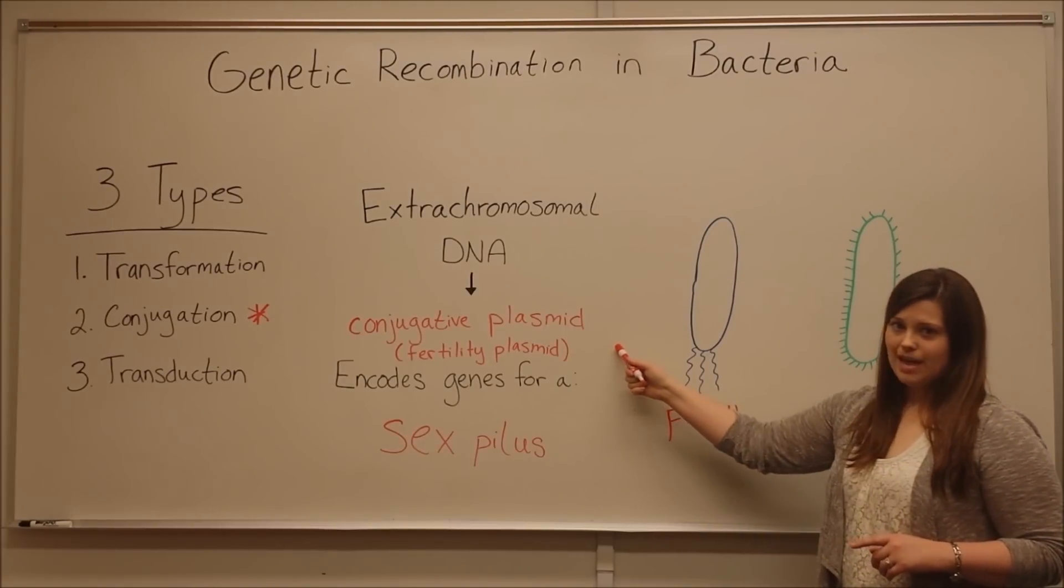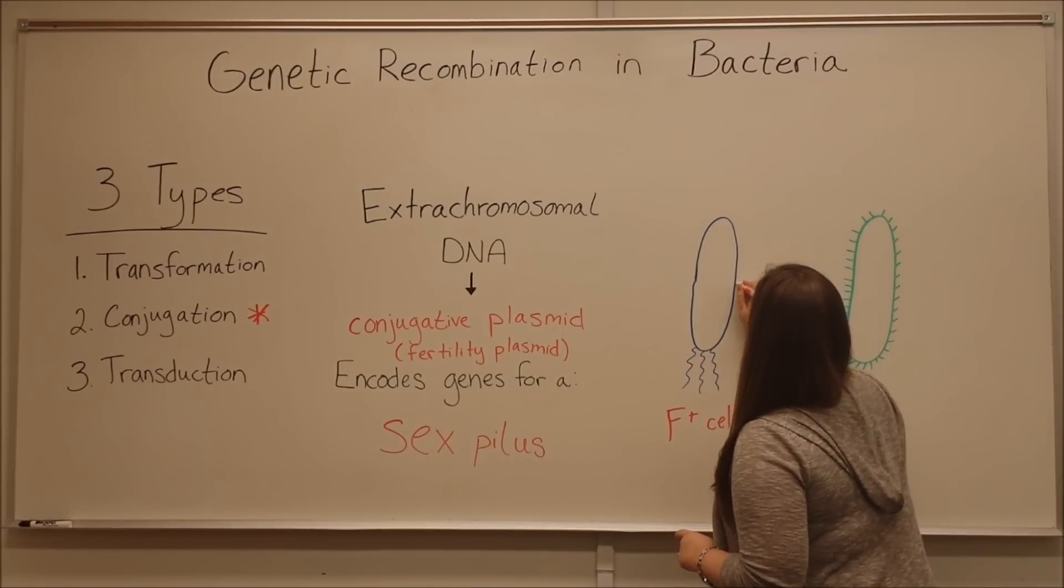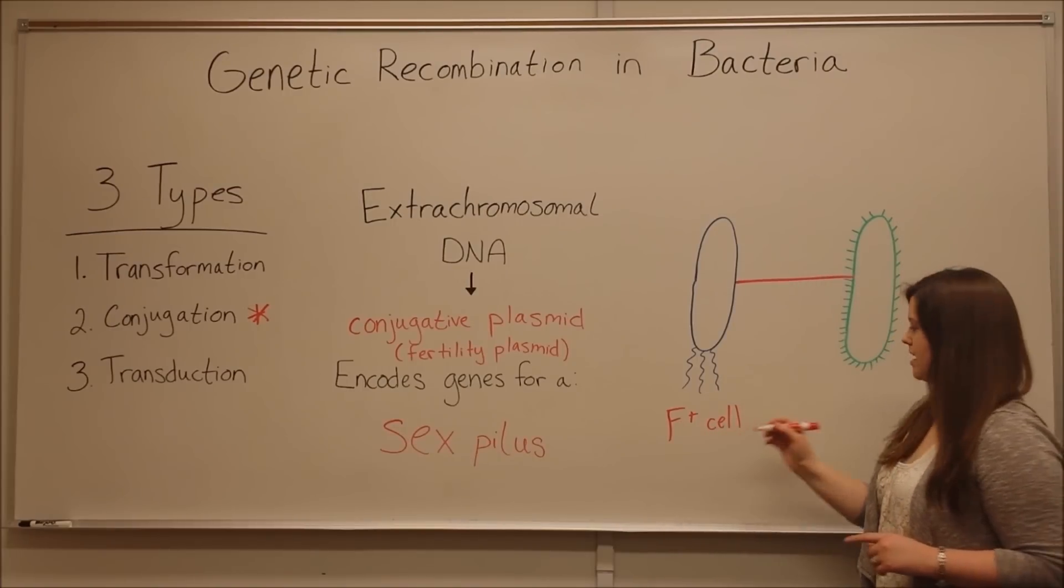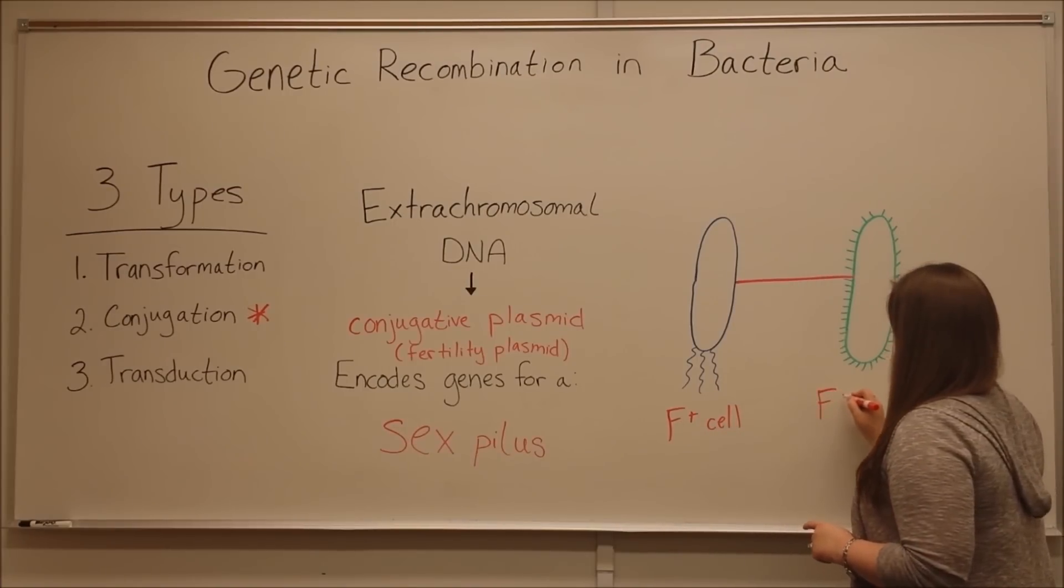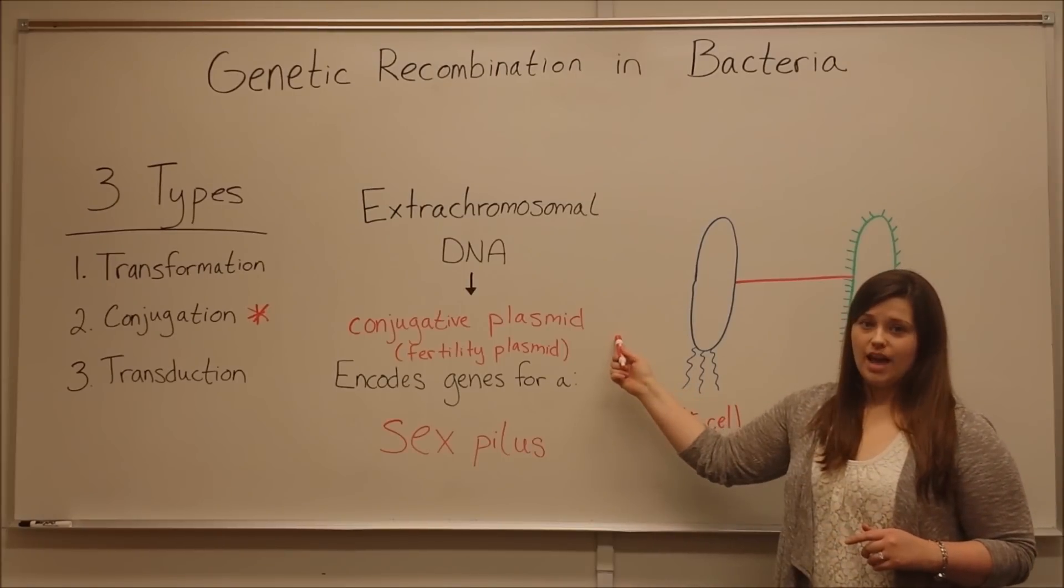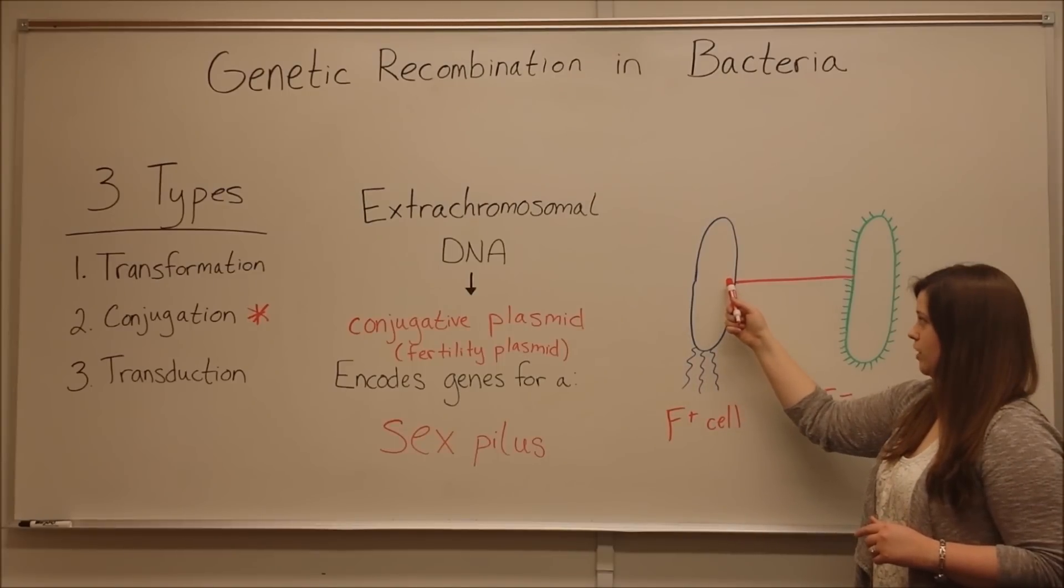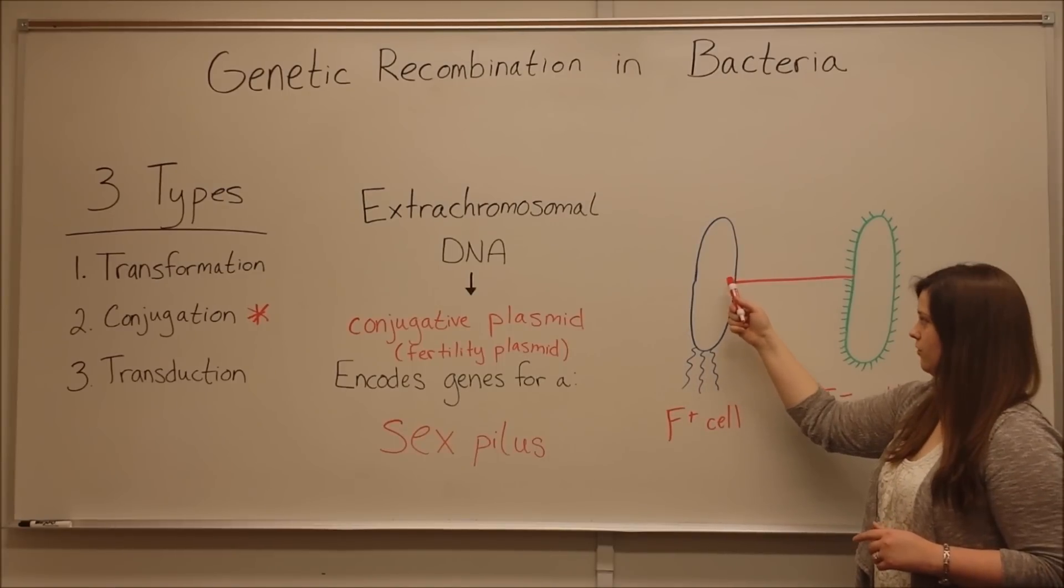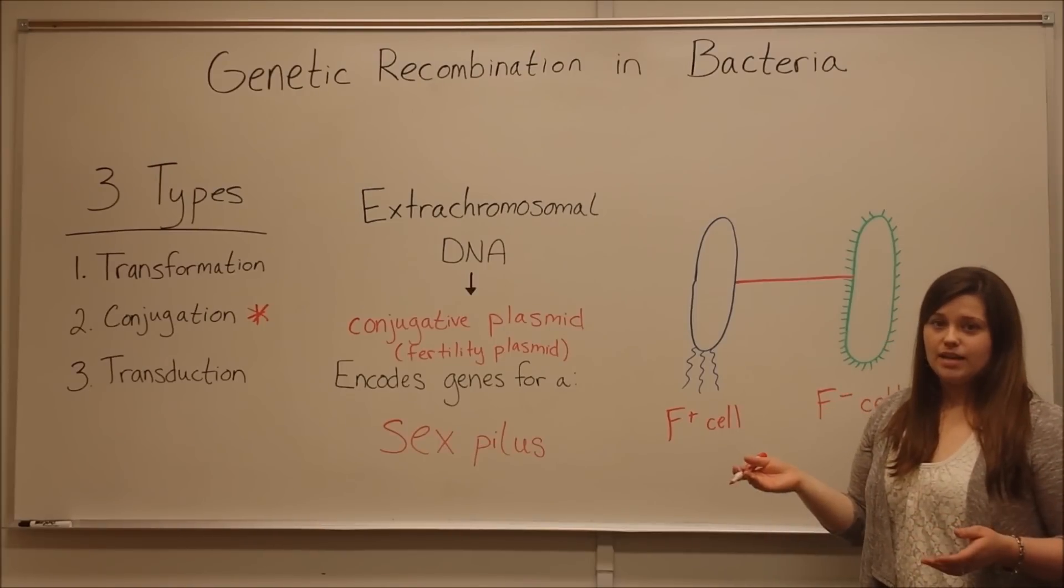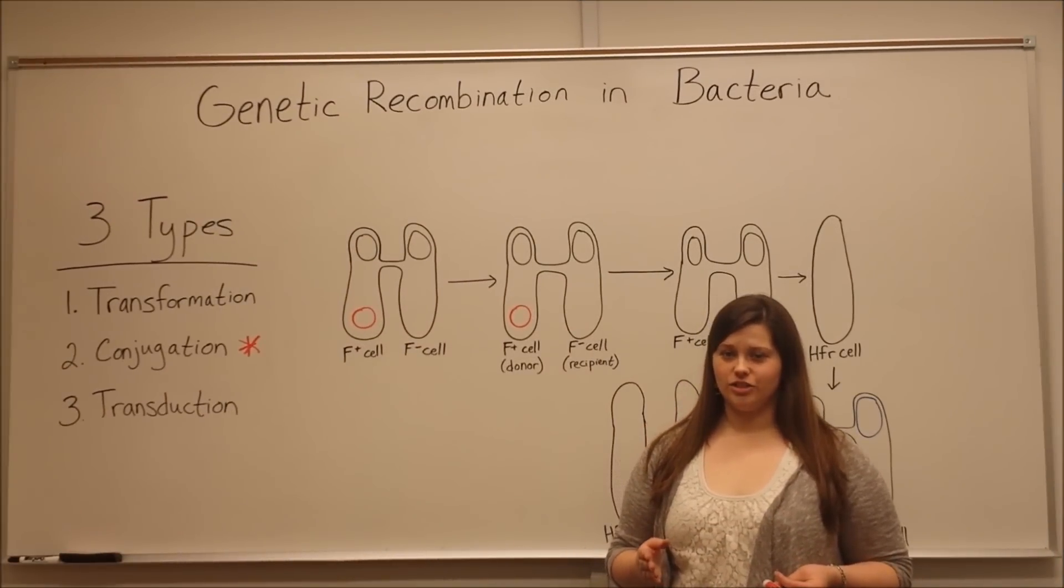The fertility plasmid encodes genes for a sex pilus, a cellular structure that allows the F-plus cell to connect with an F-minus cell, a cell that does not already have this plasmid. Then the conjugative plasmid transfers a copy of itself from the F-plus cell to the F-minus cell in the process of conjugation.